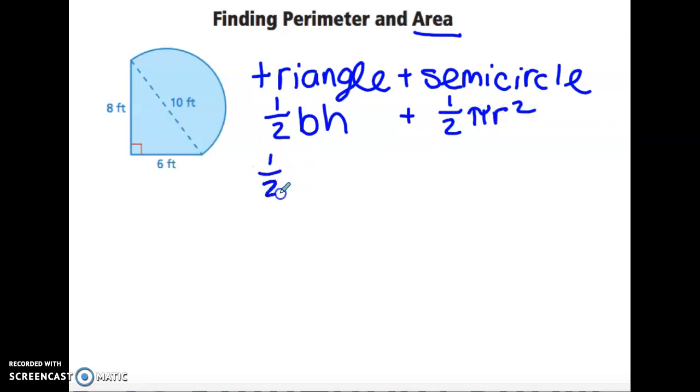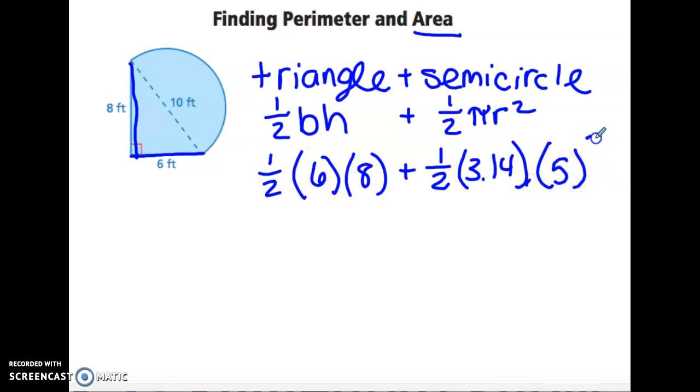So one-half times the base. This is the base of our triangle, and this is the height of our triangle, plus one-half pi. We'll use 3.14, and now we need radius. Remember we said 10 went across the whole circle, so that's diameter, so we want just half for radius, so 5 squared.